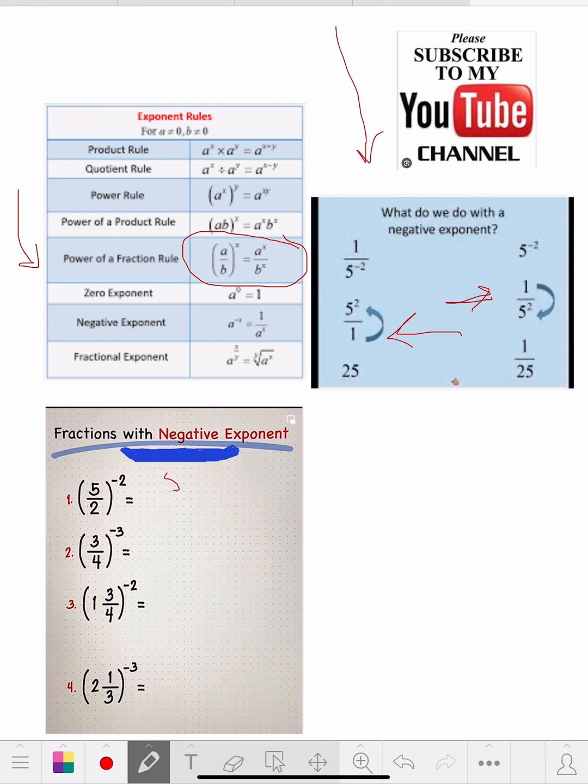This really is 5 to the negative 2 over 2 to the negative 2. And what do you do? You just flip both of them. So the 2 ends up on top with a positive 2, and the 5 ends up down the bottom with a positive 2. So 2 times 2 is 4, 5 times 5 is 25. Square that off and that was relatively easy.